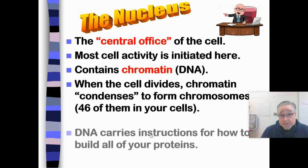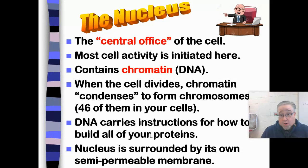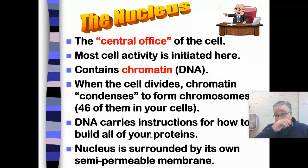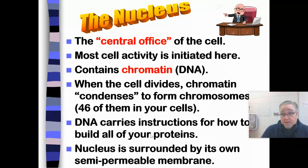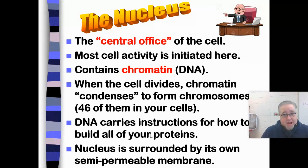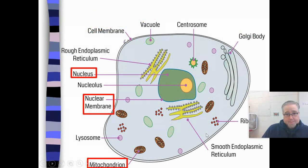The nucleus of the cell is where all of your genetic information is. That's called chromatin, which eventually is made up of 46 individual chromosomes. Those chromosomes carry all your instructions for how to build proteins. So if your cells don't have those instructions, they're not going to build proteins, which means they're not going to do what they're supposed to be doing.